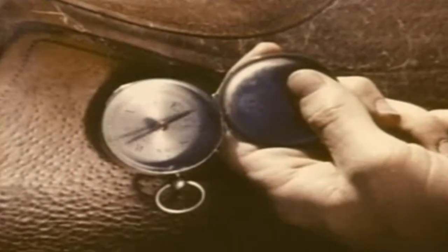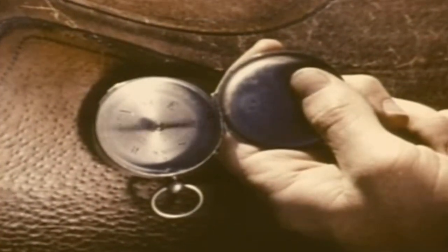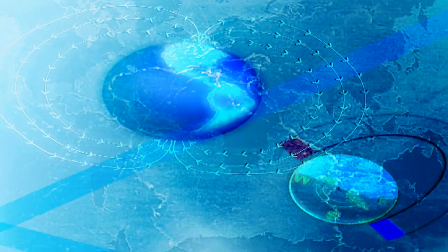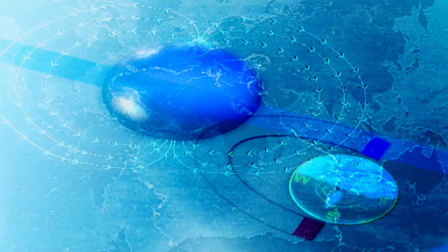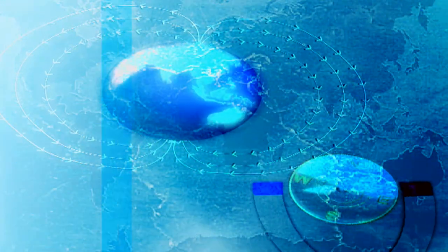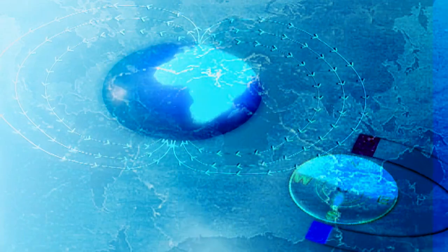You see, the Earth has an iron core, which is like a giant magnet hidden beneath its surface. It produces a magnetic field that has two poles, one in the south and one in the north.